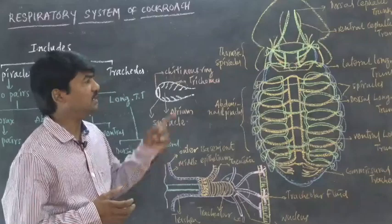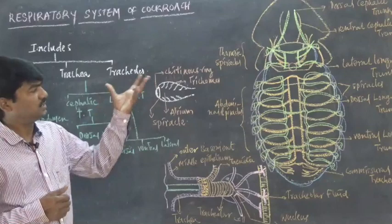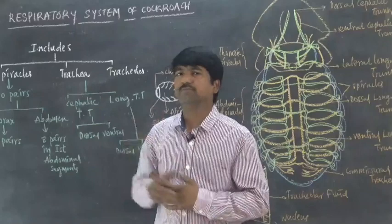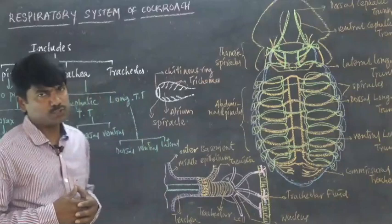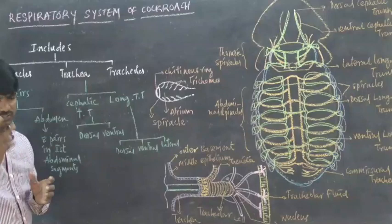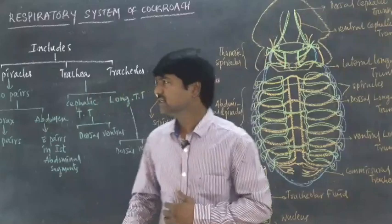For the purpose of transportation of oxygen and releasing of carbon dioxide in cockroach, a specific tracheal system is formed. The tracheal system of cockroach is composed of three structures: spiracles, trachea, and tracheoles.